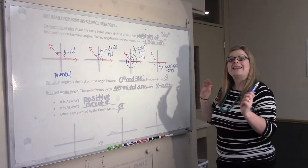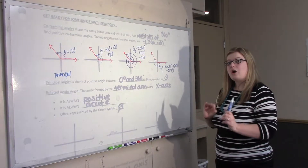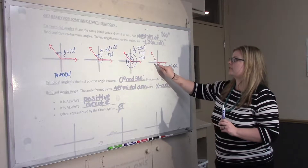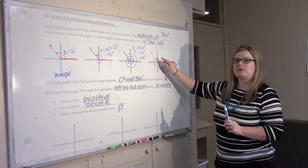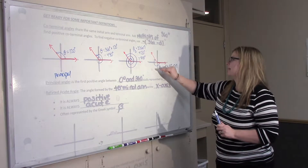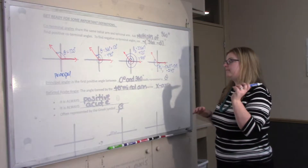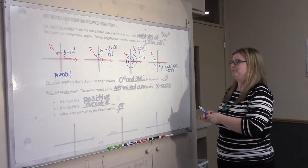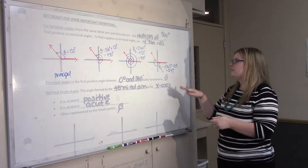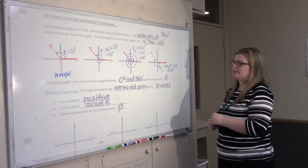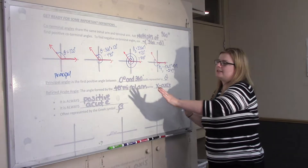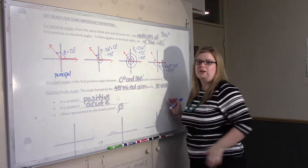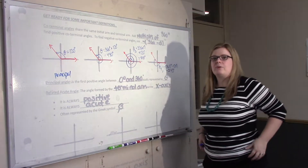So if you wanted to find another negative coterminal angle, you would go all the way around in the negative direction and then add another 240 to get there, and you would continue going in the negative direction for as long as you wanted. Those are coterminal angles, but the principal angle is the first positive angle as you go around from the initial arm.